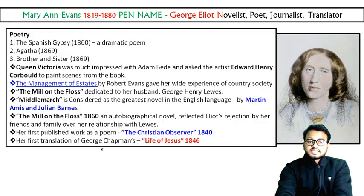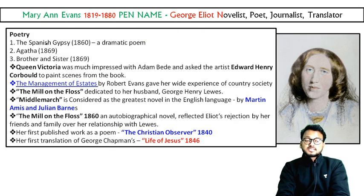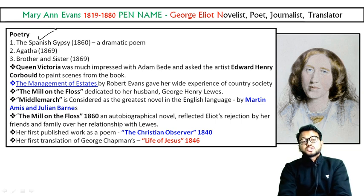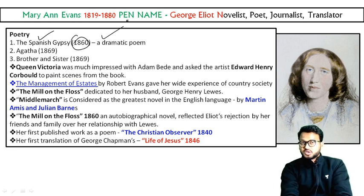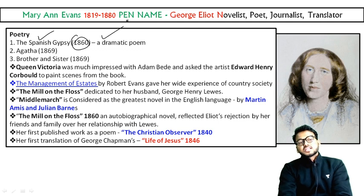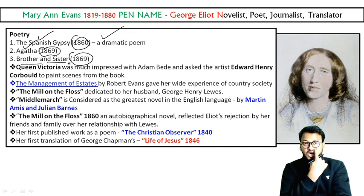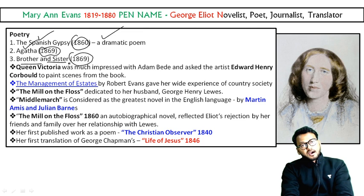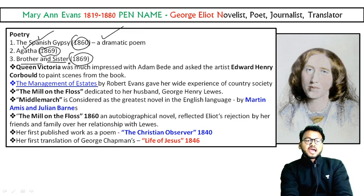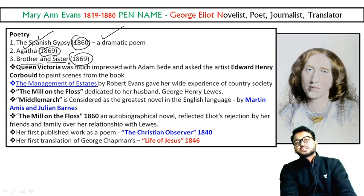Now let us look at her poetic works. The Spanish Gypsy is her poetic work that appeared in 1868 — it is a kind of dramatic poem. She also wrote Agatha, which appeared in 1869, and Brother and Sister, also appearing in 1869.